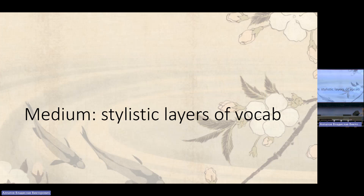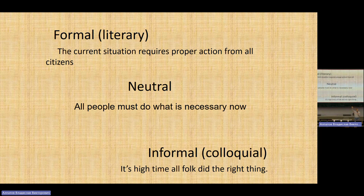Now we look at the medium — the stylistic layers of vocabulary. To remind you of this theory: there are broadly three main spheres of vocabulary depending on their stylistic coloring. The formal or literary layer correlates with formal situations where you are in public with people who are not very familiar to you. The formal layer of vocabulary is more associated with the printed page — first and foremost used in writing: fiction, journalism, newspapers, official documents.